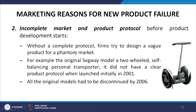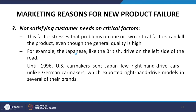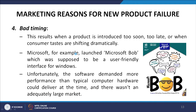The second reason is an incomplete market and product protocol before product development starts. Without a complete protocol, firms try to design a vague product for a phantom market. For example, the original Segway model, a two-wheeled self-balancing personal transporter, did not have a clear product protocol when launched in 2001, and all original models had to be discontinued by 2006. The third reason is not satisfying customer needs on critical factors — a problem on one or two critical factors can kill a product even if general quality is high.